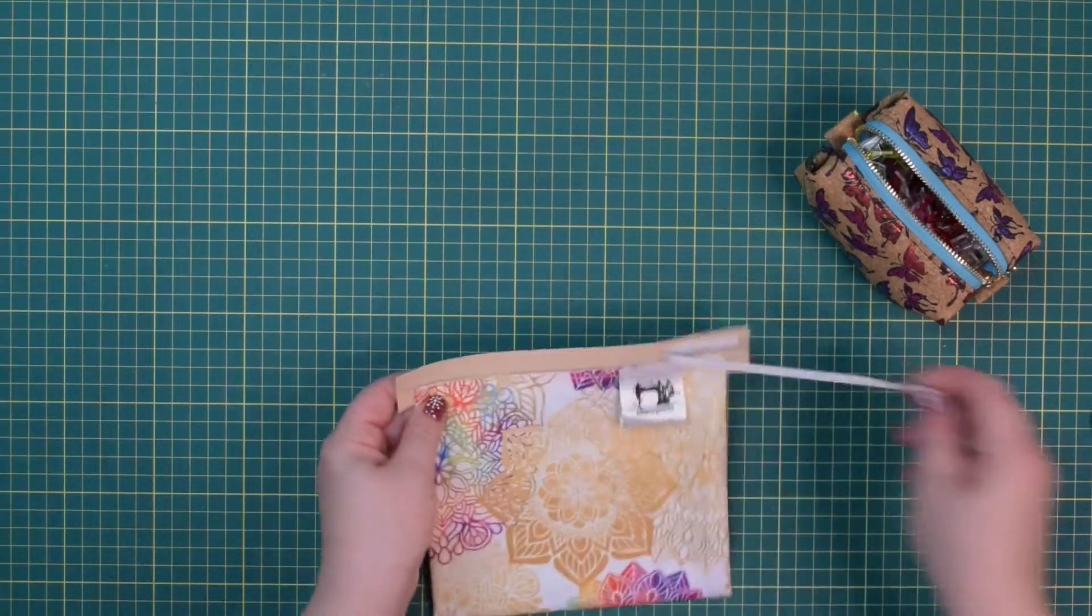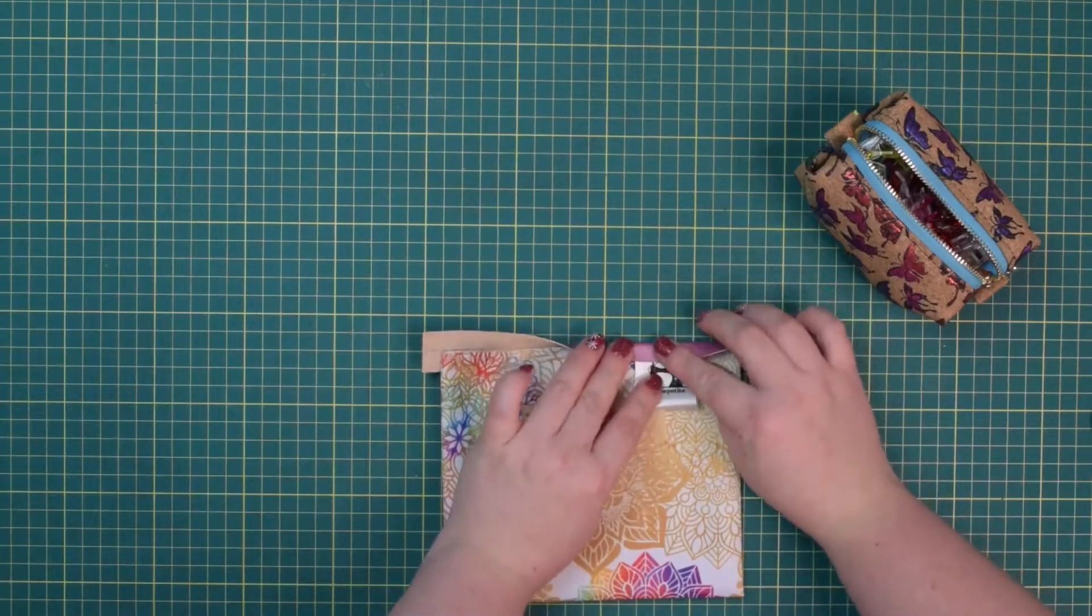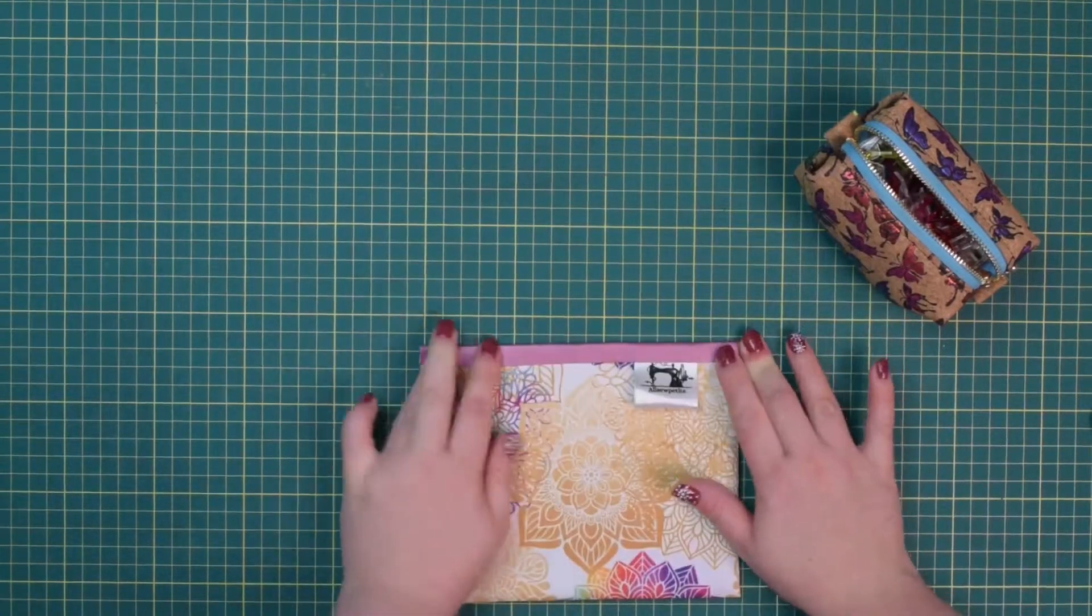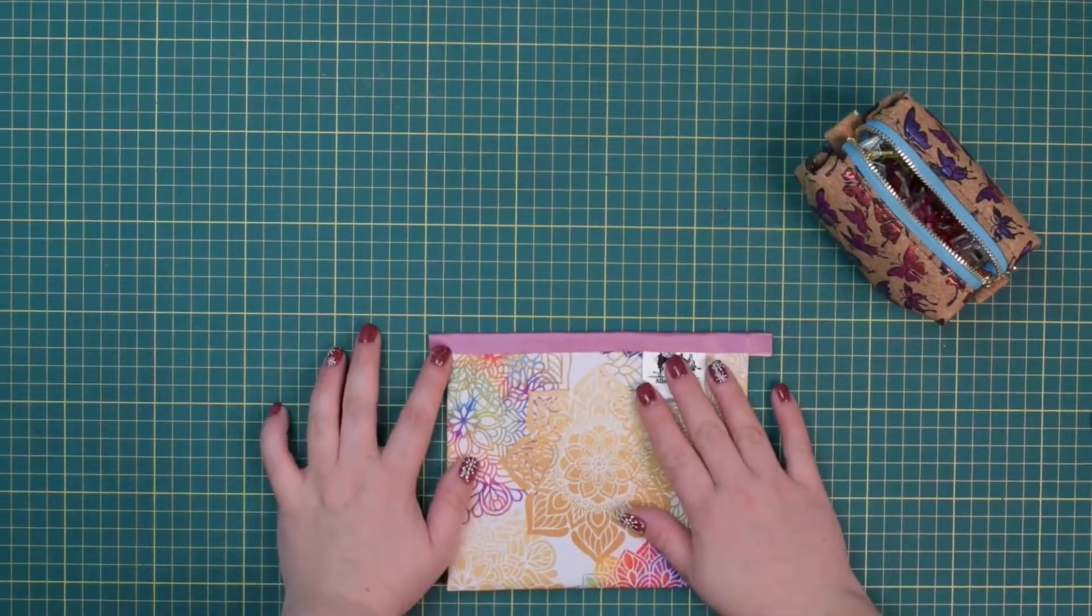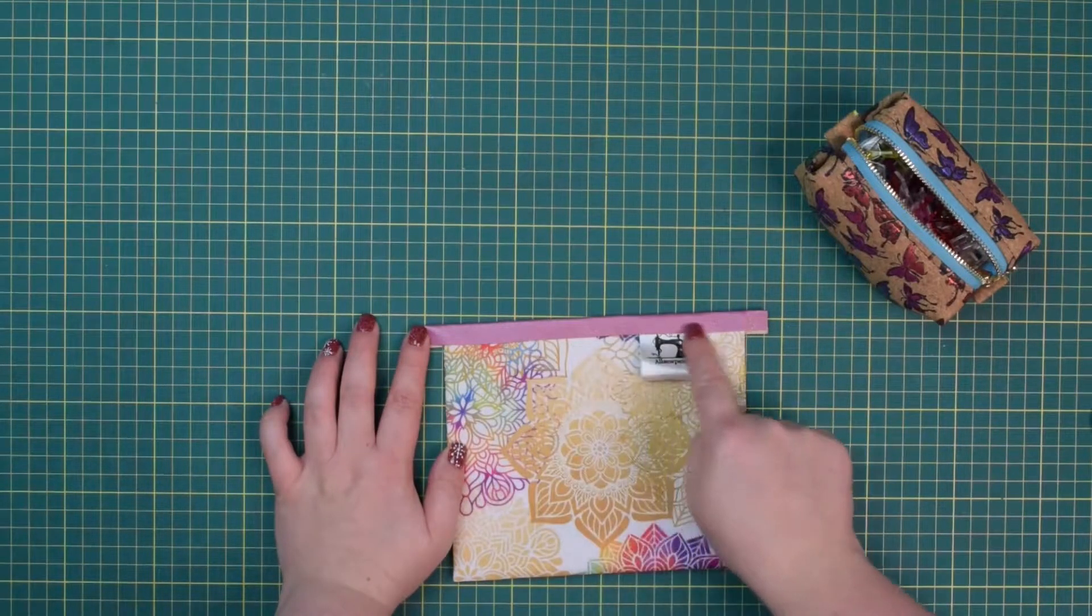Then you can peel off the other cover and you're going to fold the pocket trim in half. Here you go, just like that. Now we're going to take this to the machine and we're going to stitch close to the edge.